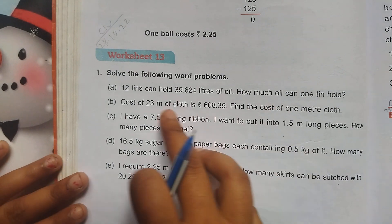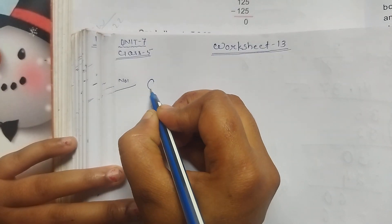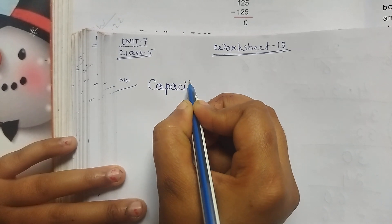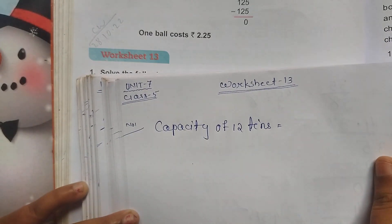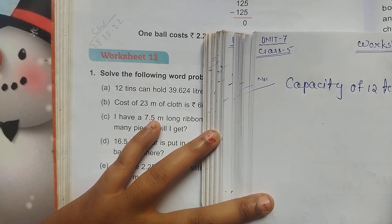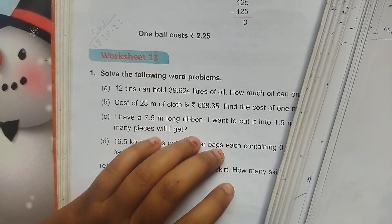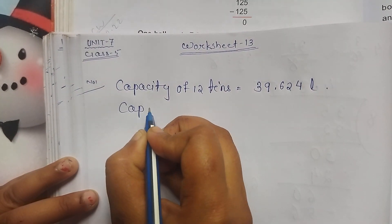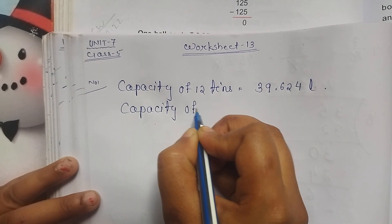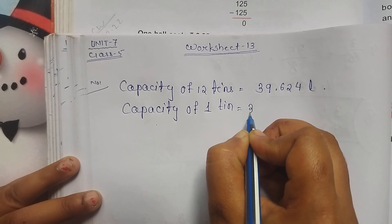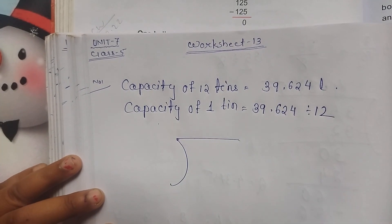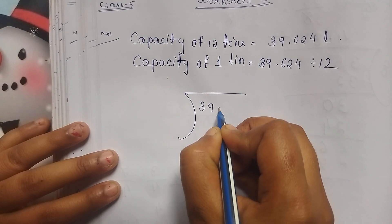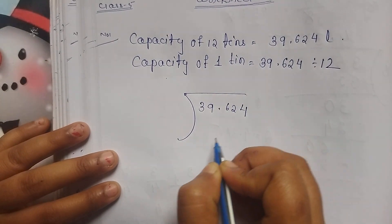First, I see the capacity of 12 tins. Capacity of 12 tins equals 39.624 litres. Then, capacity of 1 tin equals 39.624 litres divided by 12.